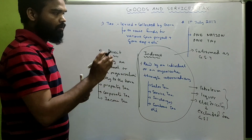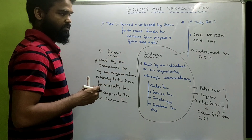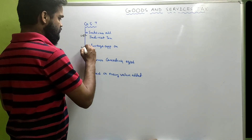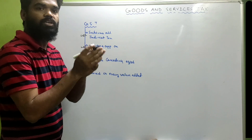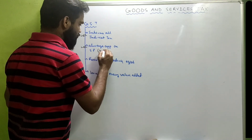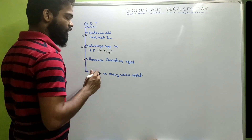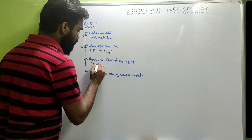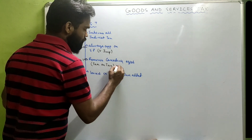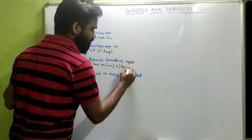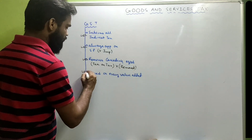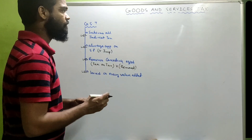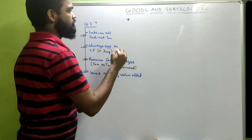Due to the 'One Nation' theory, the government came up with the idea of GST. GST is a subsuming of all indirect taxes. GST is always applied on the selling price — remember this, it's very important. GST helps to remove the cascading effect; earlier we were paying tax on tax, but this system is removed by GST. GST is levied on every value added.